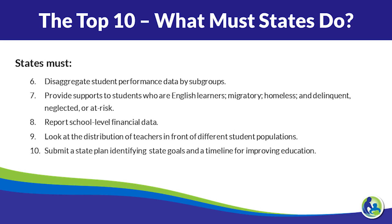Seven: provide supports to students who are English learners, migratory, homeless, and delinquent, neglected, or at risk. Eight: report school-level financial data.